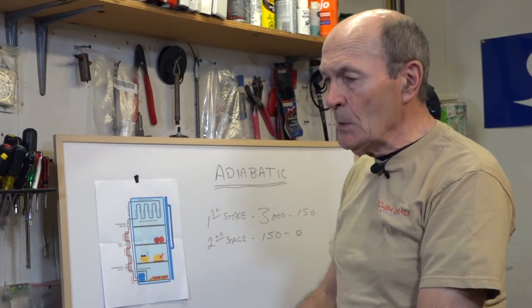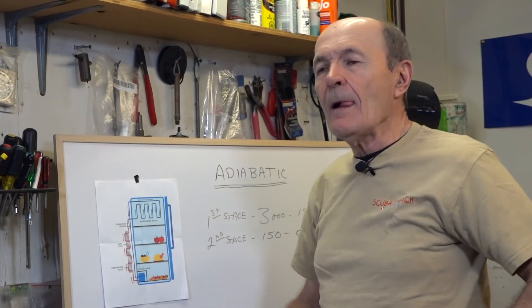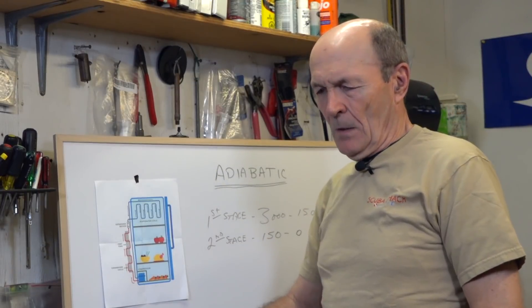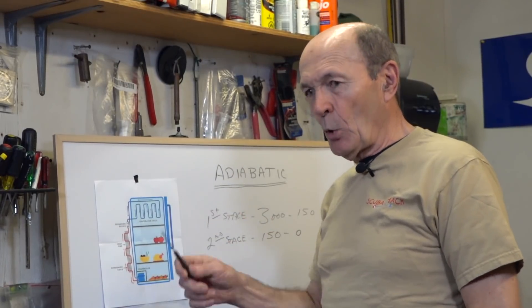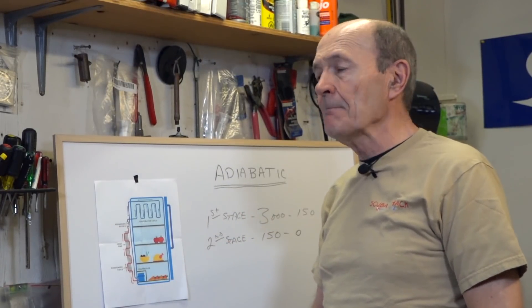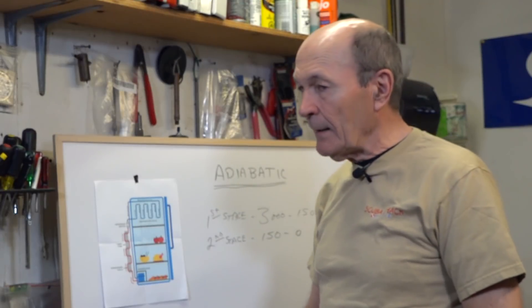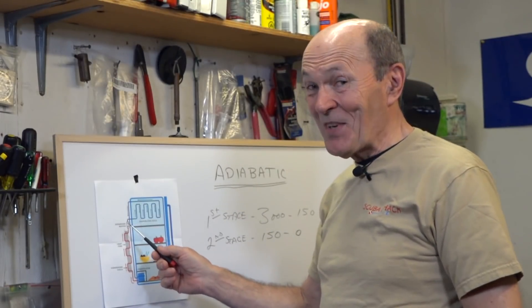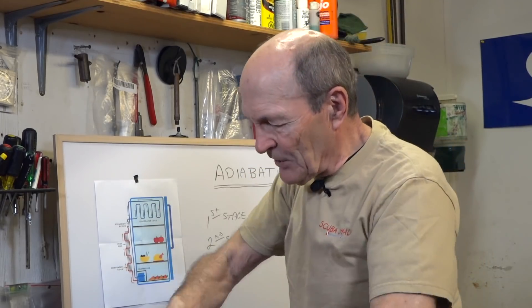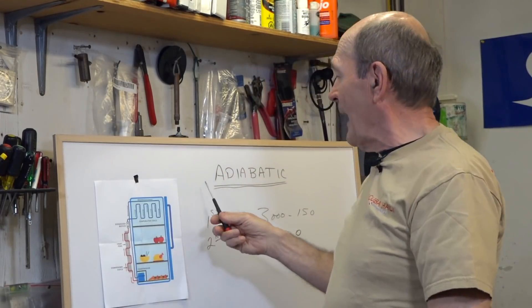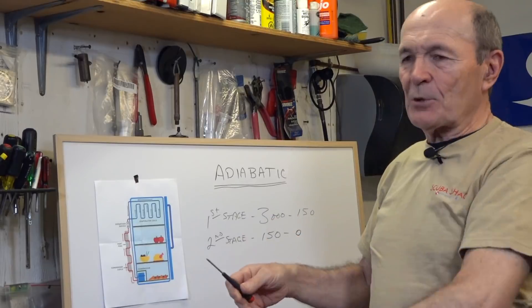So you get to the dive site, okay? Your tank is cooled off now. So the air that went in there, it was a little bit warm from the compression. It's already cooled off a little bit, okay? Now you put your regulator on it, expansion device, and you take a breath, and the pressure goes from 3000 down to 150, and adiabatic takes over, and the temperature drops again. Exactly right.